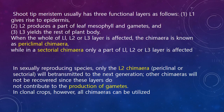The shoot tip meristem has three functional layers: L1, L2, and L3. L1 gives rise to epidermis; L2 produces the major part of leaf mesophyll and gametes, so it is concerned with sexual reproduction; L3 yields the rest of the plant body. When the whole L1, L2, L3 layer is affected, it is called a periclinal chimera; if only part is affected, it is a sectorial chimera. In sexually reproducing species only the L2 chimera is involved; in clonal crops, all chimeras can be utilized.